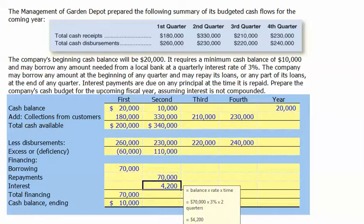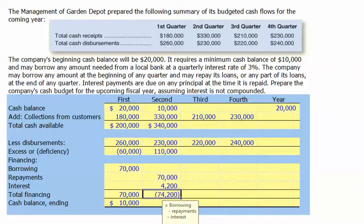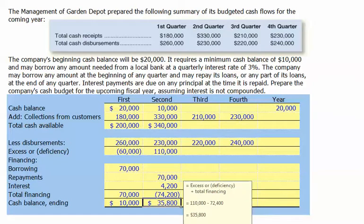We'll also pay $4,200 in interest. This is the $70,000 borrowed at the beginning of the first quarter times 3%, and the $70,000 outstanding during the second quarter at 3% — so $70,000 × 3% per quarter × 2 quarters = $4,200. Our total financing cash outflow is $74,200. When we subtract this from the $110,000 available, it gives us a remaining ending cash balance of $35,800.